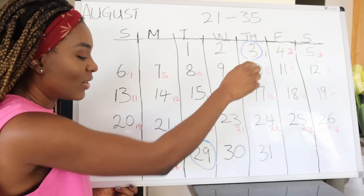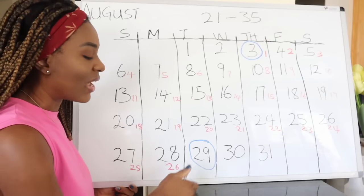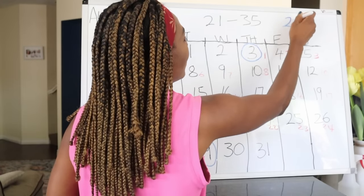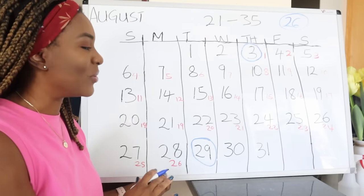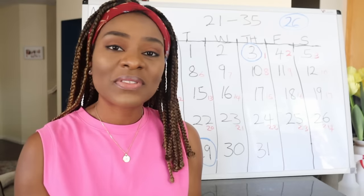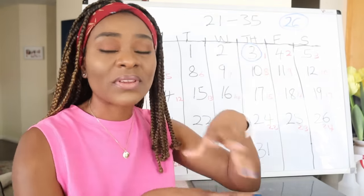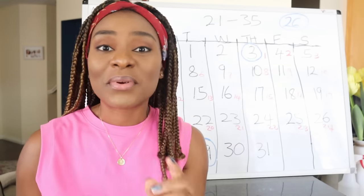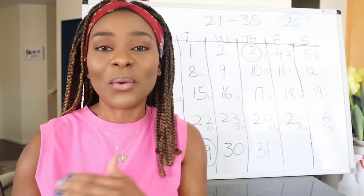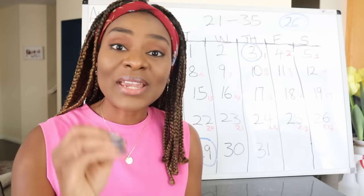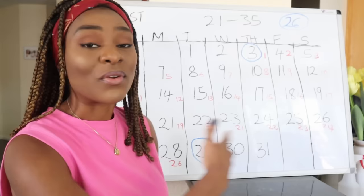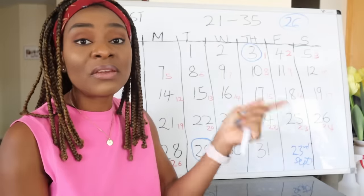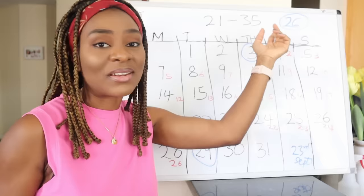From the first day my period started to the day before my next period started, the days in between are 26 — so I have a 26-day cycle. Here's something people find confusing: some think that because their period came on a particular date, it will always come on that date every month. That's not how it works. The day your period comes depends on the length of your cycle. If you have a 26-day cycle, you expect your next period after 26 days.